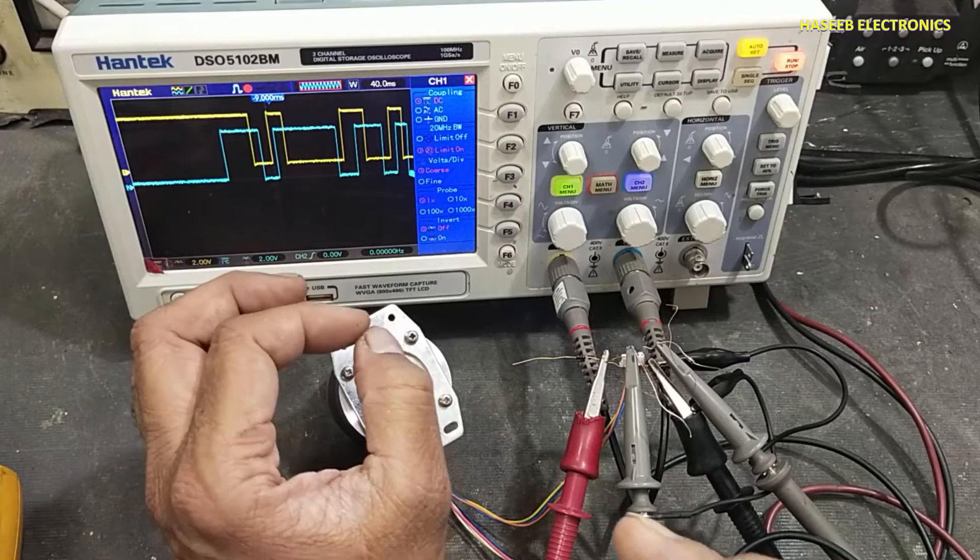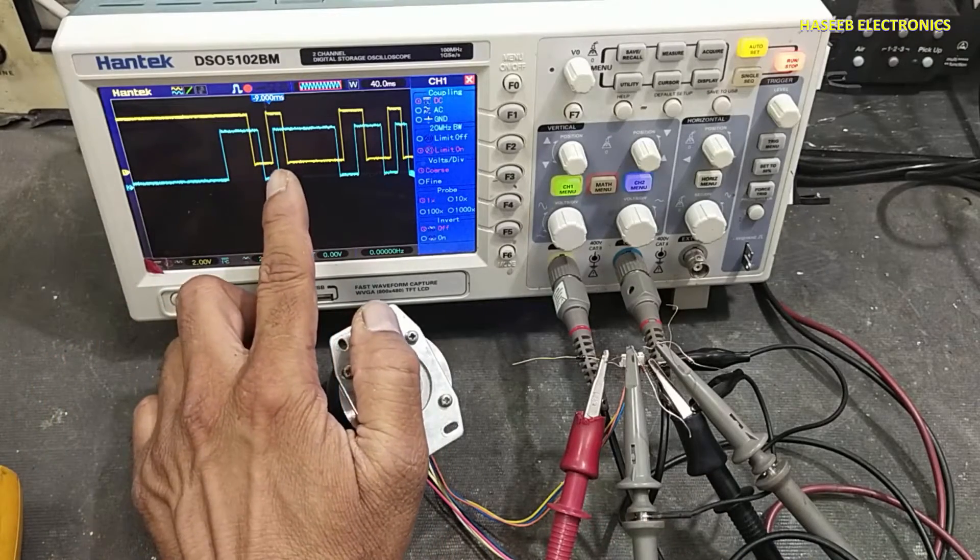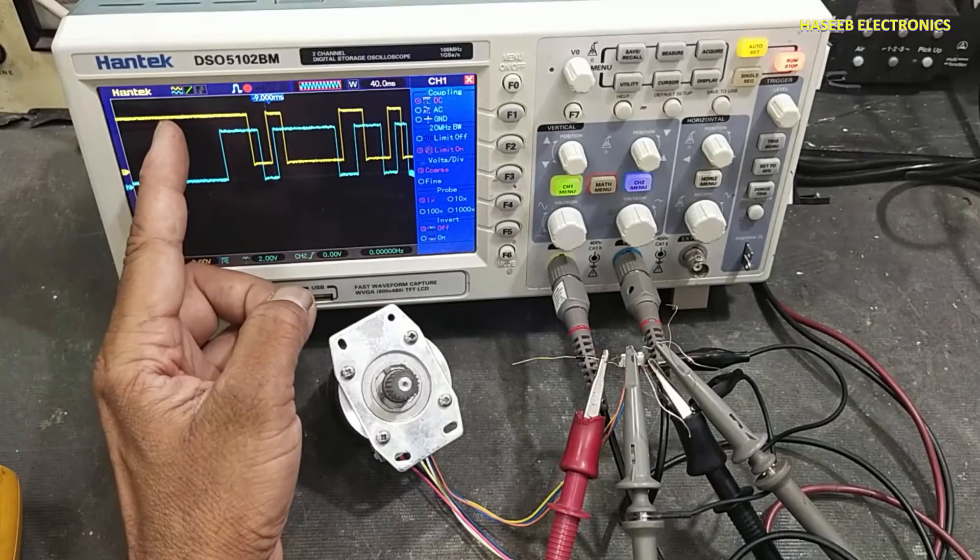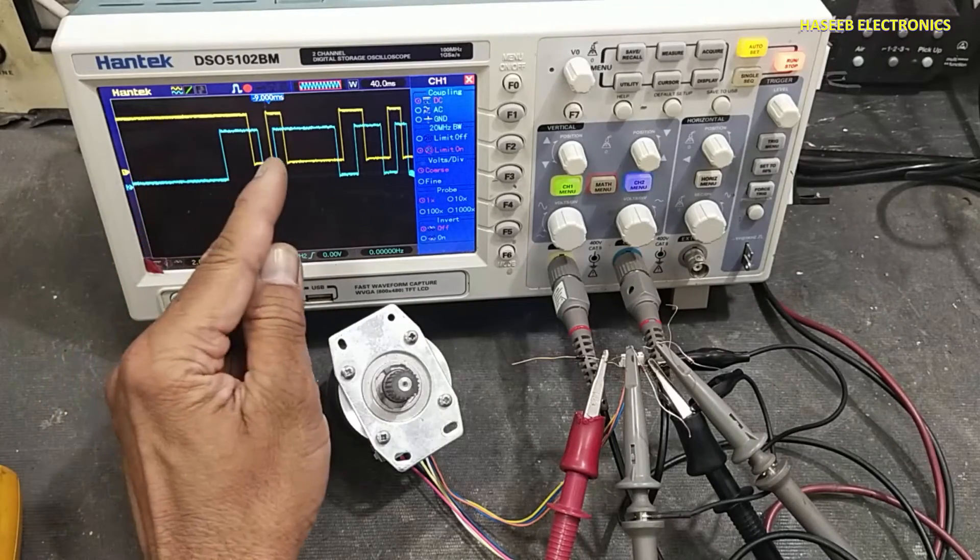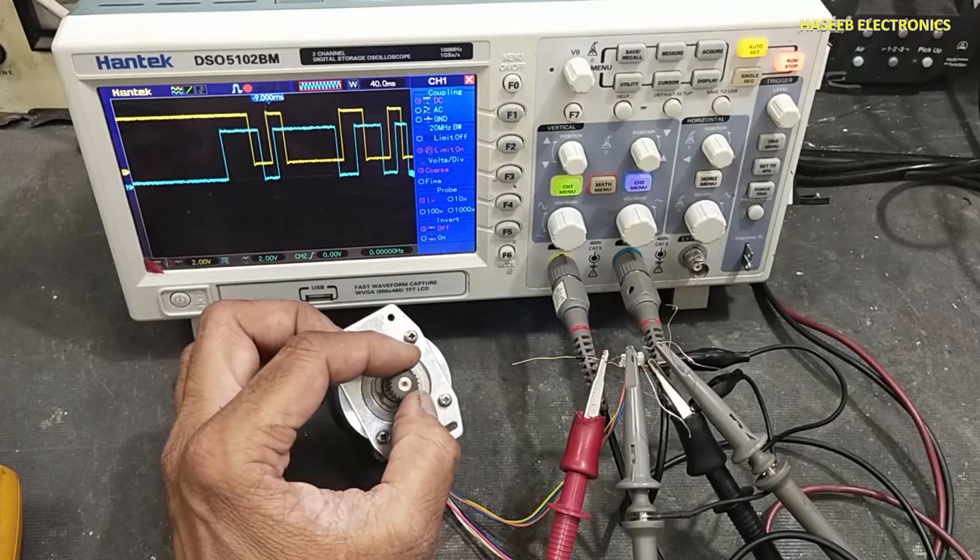Rotation determination will be established based on these two signals. If channel A signal is coming first and channel B is later, that means counterclockwise rotation.